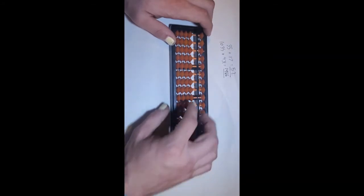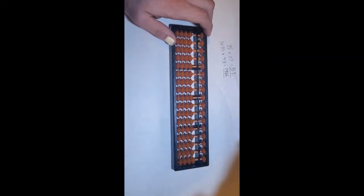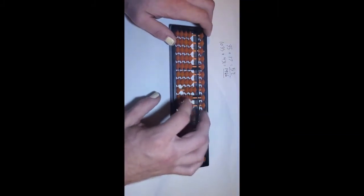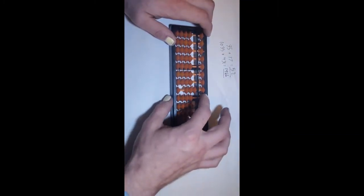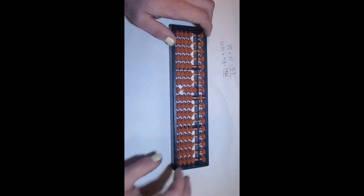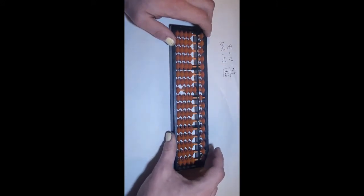Each bead in the Earth counts as one. So we want to express the number 35, bring three up in the tens column, one down in the ones column, and we have 35 written on the Soroban.